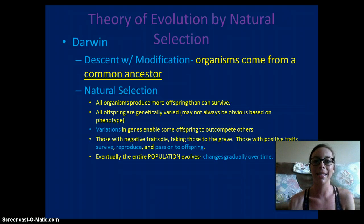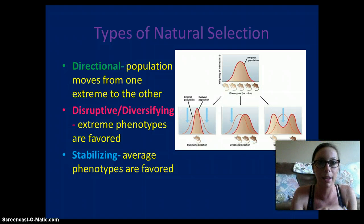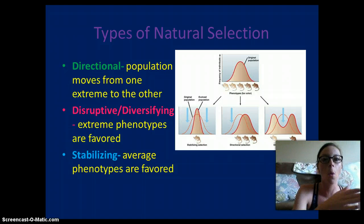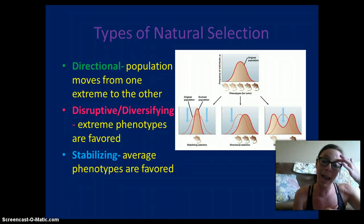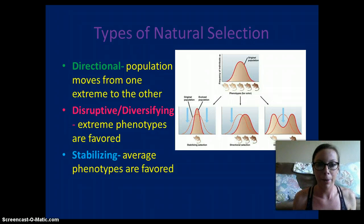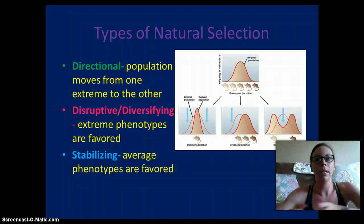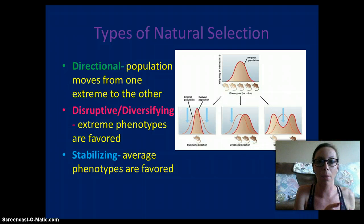What evolution really is, is a change in a population over time. There are different types of natural selection — we're going to talk about three of them. Directional selection is when the population moves from one extreme phenotype to the other. For example, with small, medium, and large beaks in a bird, all organisms will end up with either large beaks or all will have small beaks.